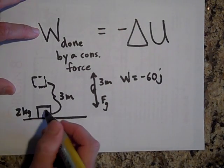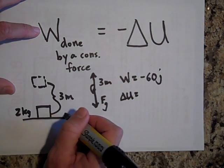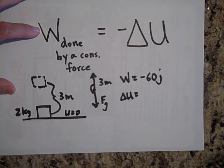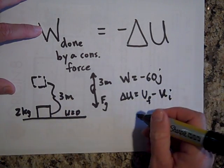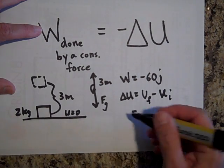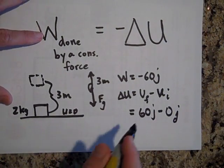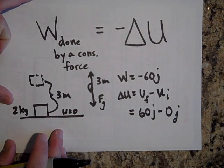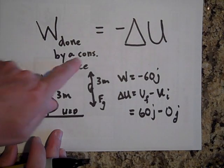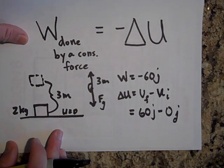Now let's see how much the potential energy changed. Let's call the starting point our zero potential energy line. The object went from having no potential energy to having some, so ΔU = U_final − U_initial. U_final is mgh, which is 60 joules, minus zero joules. So the change in potential energy is positive 60 joules, but the work done by gravity is negative 60 joules — that's why the work done by a conservative force equals the negative change in potential energy.